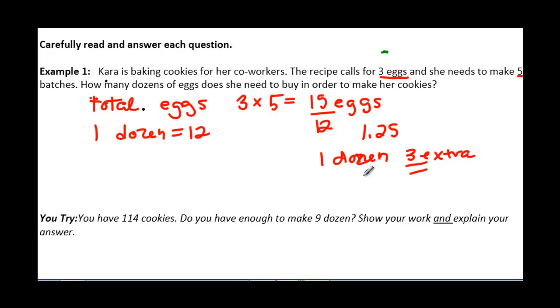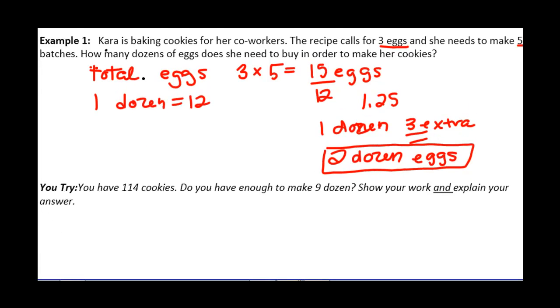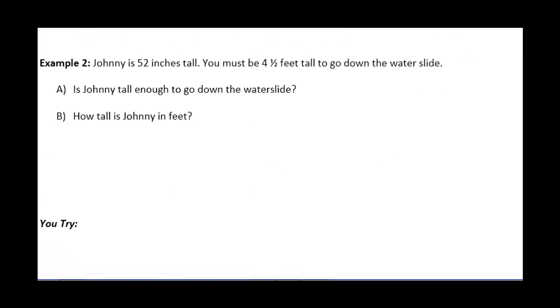Because if I buy one dozen, that wouldn't be enough to make all of the cookies. So I'm going to have to buy two dozen eggs in order to make all the cookies. I'm going to put a box around this so I know exactly where my answer is. We're going to skip over the You Try. You'll be doing that later on.